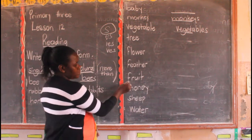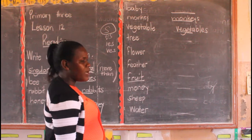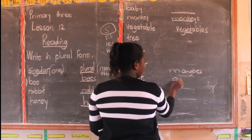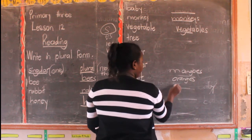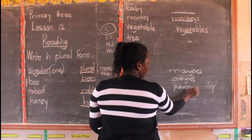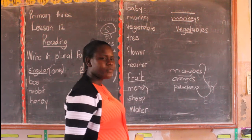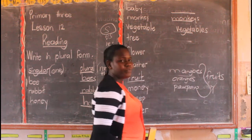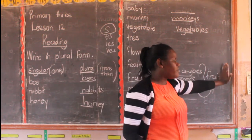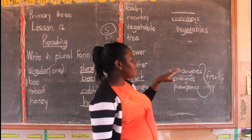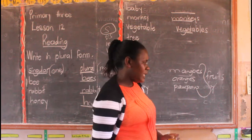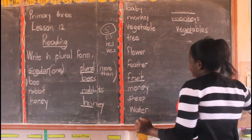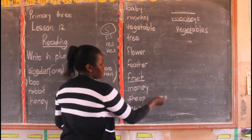Then we have fruit. For example, a collection of mangoes, oranges, and so on — they are all called fruit. We don't say fruits. Most of us say fruits because we are talking about mangoes and oranges, but no — it has no plural form. It remains fruit. Even though they are ten, you say fruit.